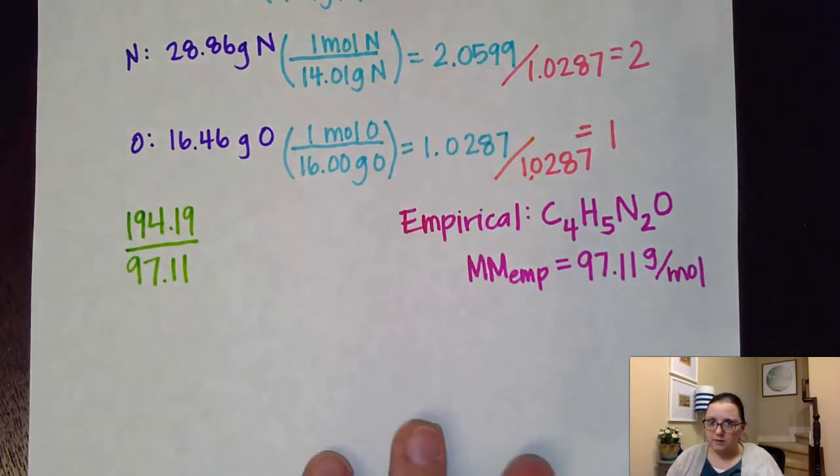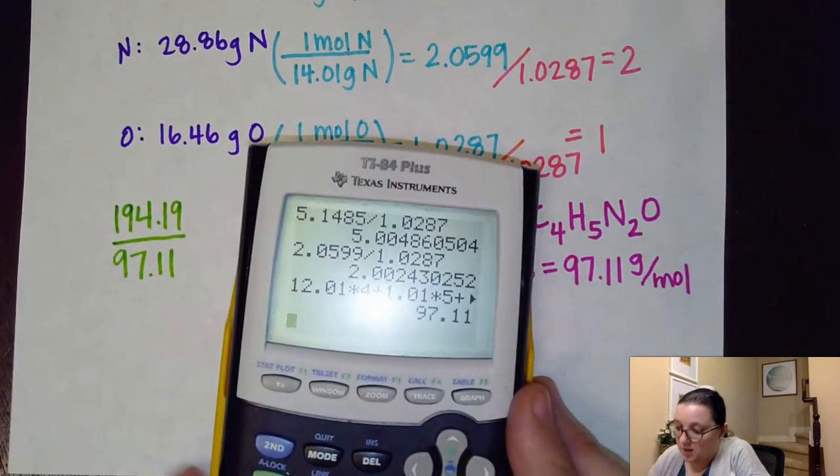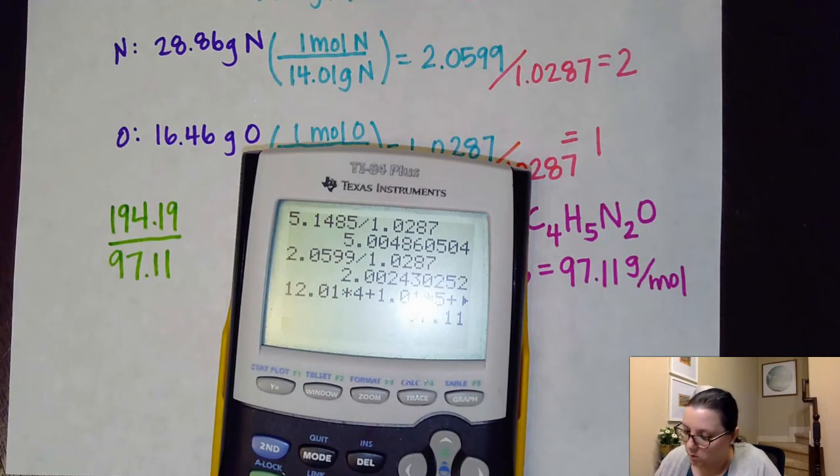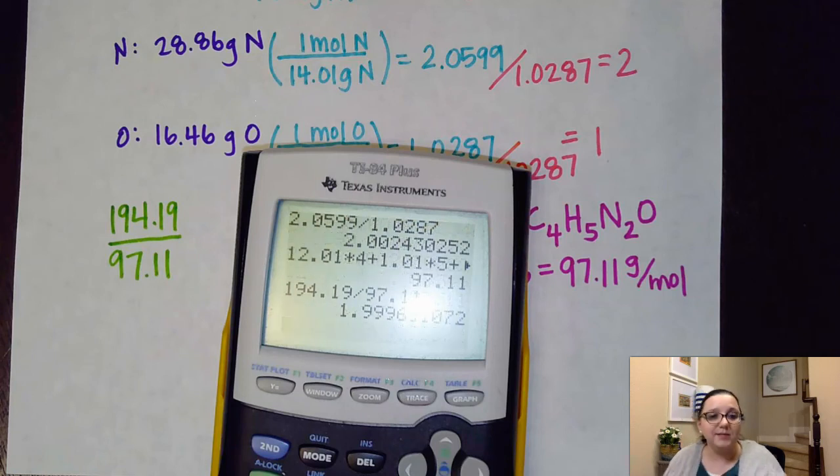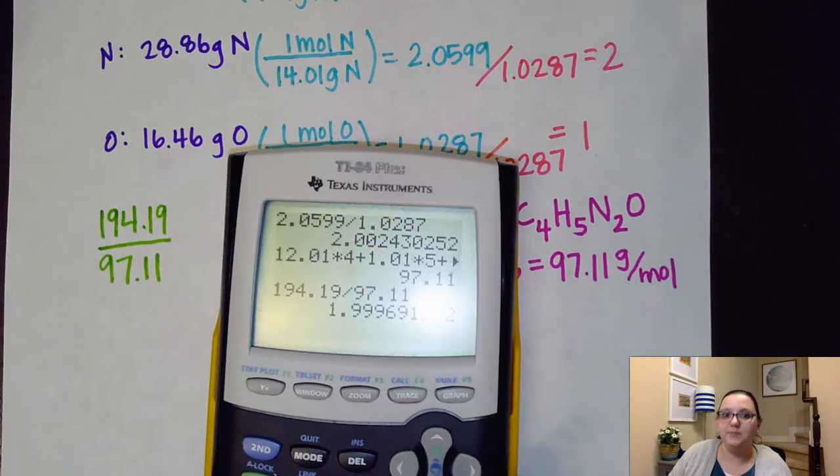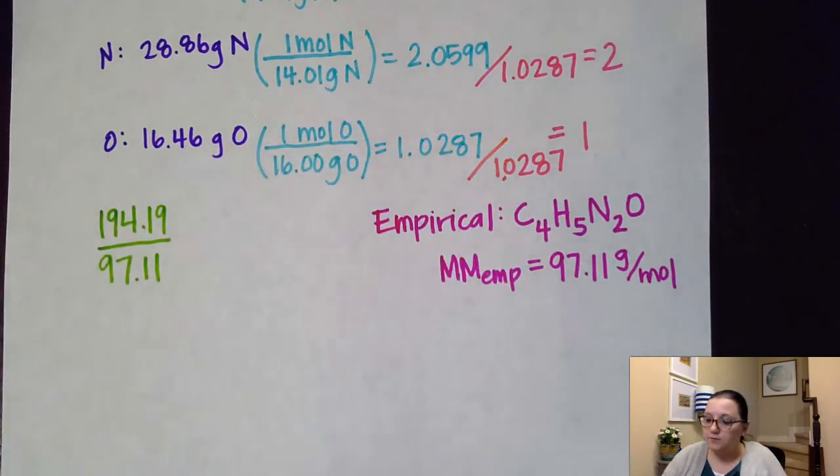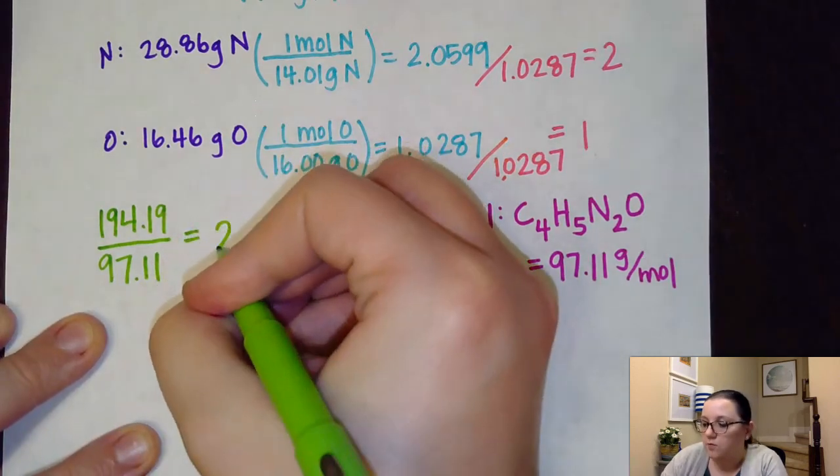Now, if you did everything right, this should come out to really darn close to a whole number. And I see that that comes out to 1.999, which basically means that I have a value here of 2 for my multiplier.